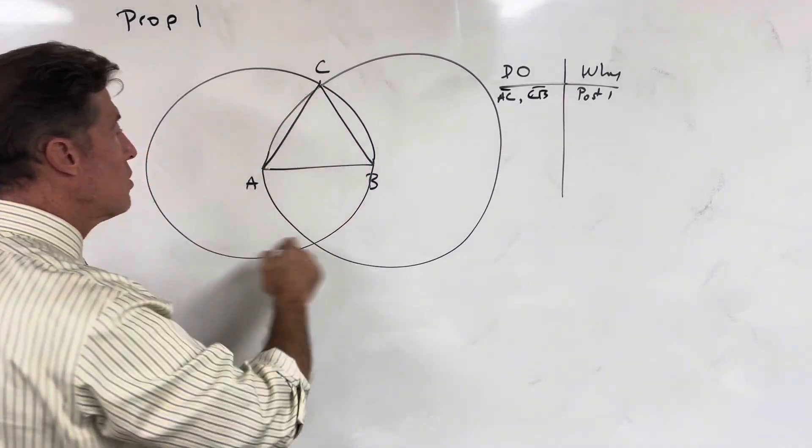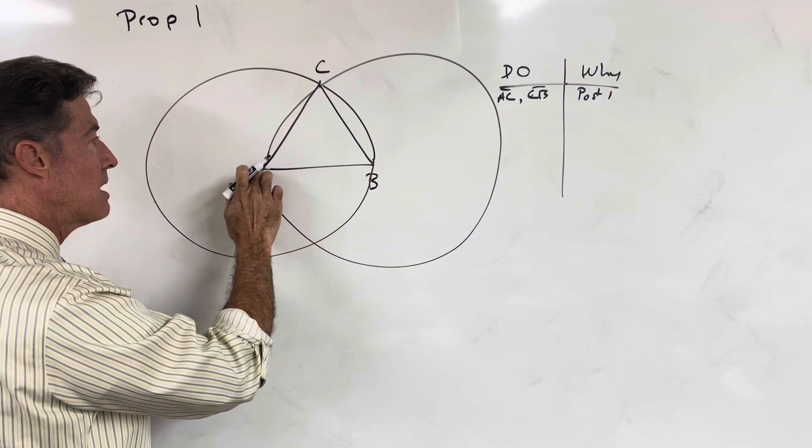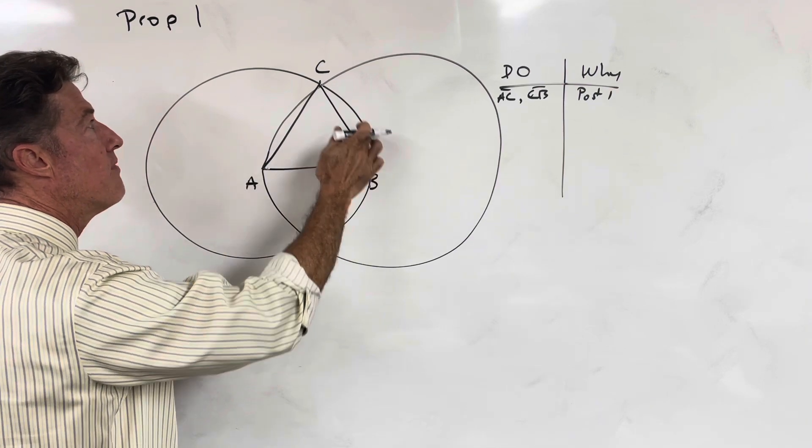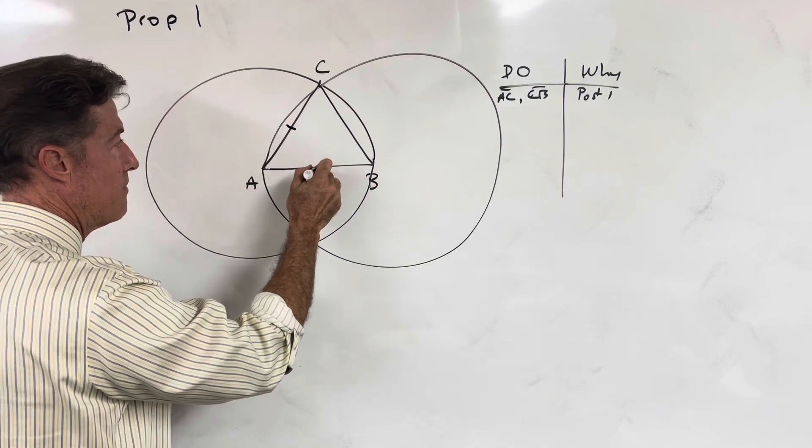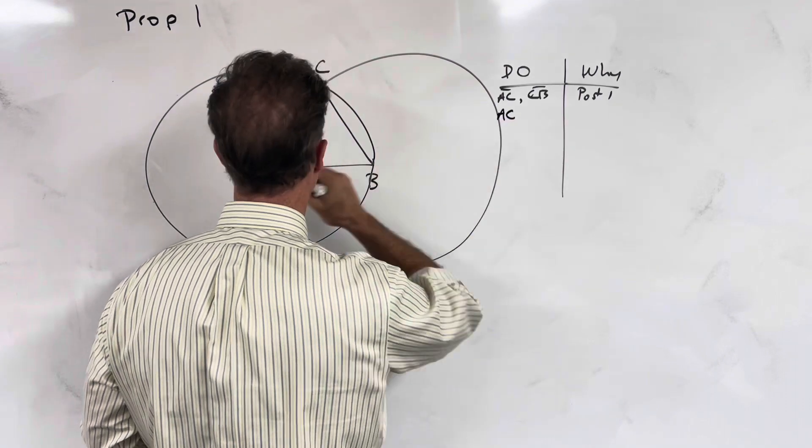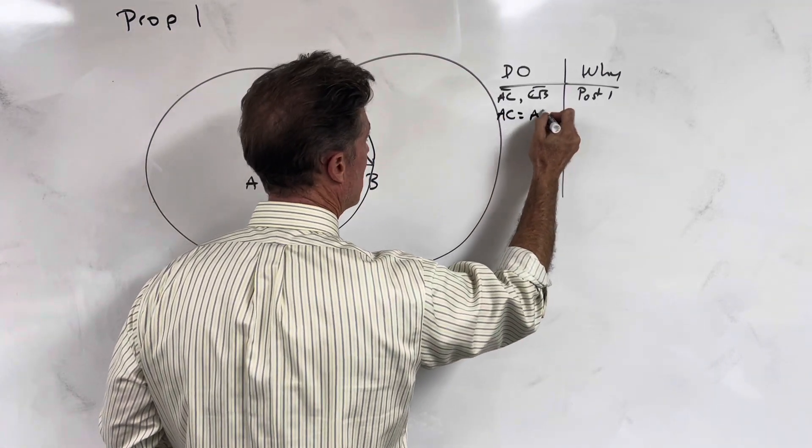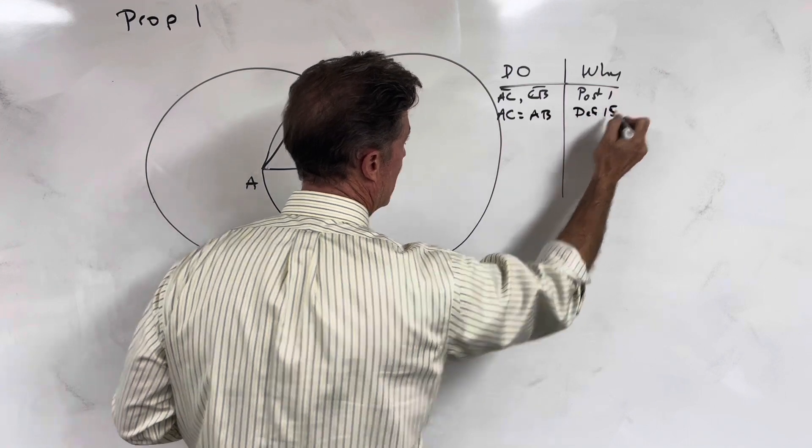Now let's look at circle A. We have two lines, AC and AB, coming from the center of the circle and falling on the circumference of the circle. By definition, that makes them radii. And we know that the radii of any given circle are equal. So AC is equal to AB. And this is from definition 15 of circles.